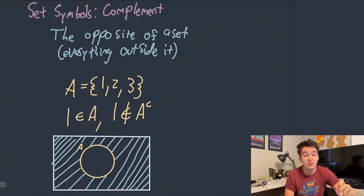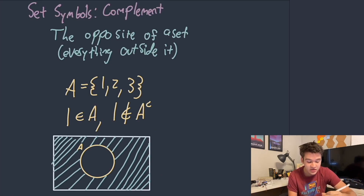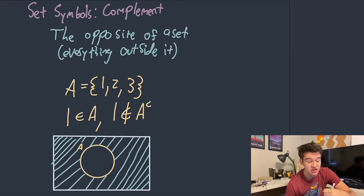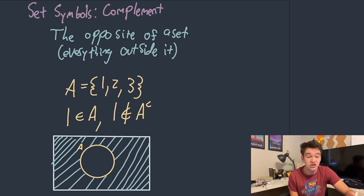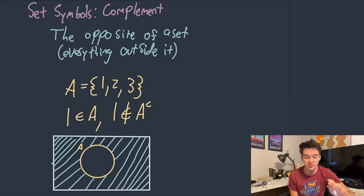The next set symbol I want to talk about is the complement. The complement of a set is essentially the opposite of a set — it's representing everything outside of it. For example, we have this set called A which is {1, 2, 3}. So we could say that 1 is a member of A, but 1 would not be a member of the complement of A. The complement of A, as we can see represented in the Venn diagram in the shaded area, is everything outside the set of A. You'll more often see it used in bigger equations, which we'll talk about a little bit more in a second.